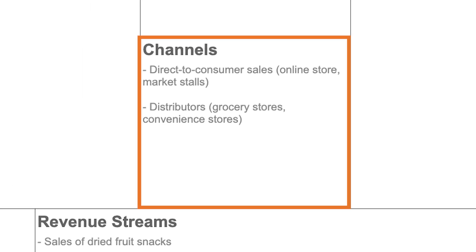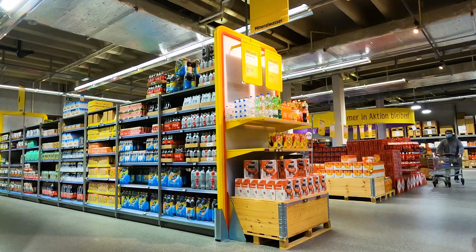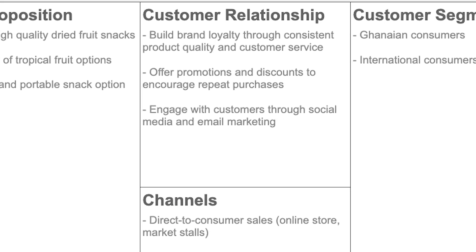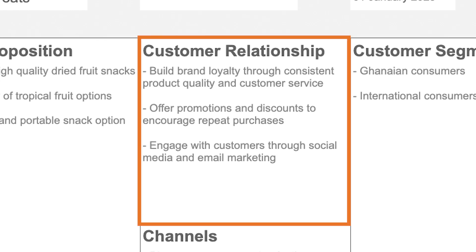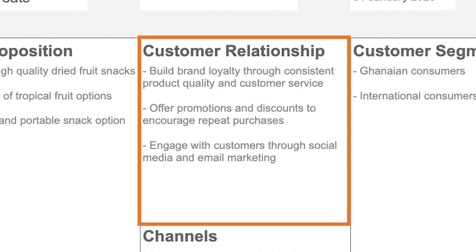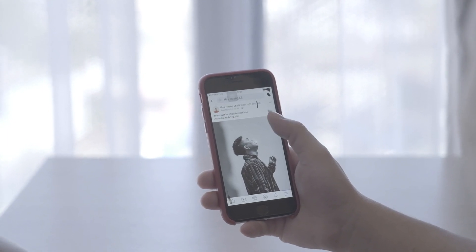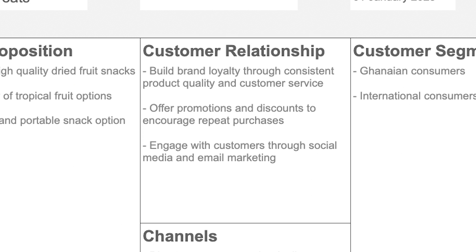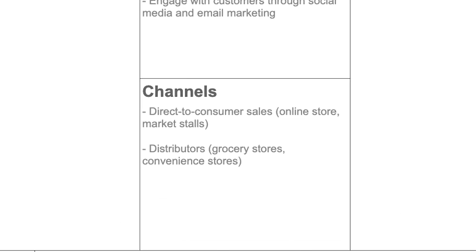For channels, Tropical Treats has two: a direct-to-consumer channel where you can order online and have products delivered, and distributors such as grocery shops, convenience stores, and malls. For customer relationships, they are building brand loyalty through consistent product quality and good customer service, offering promotions and discounts to encourage repeat purchases, and engaging with customers through social media and email marketing.